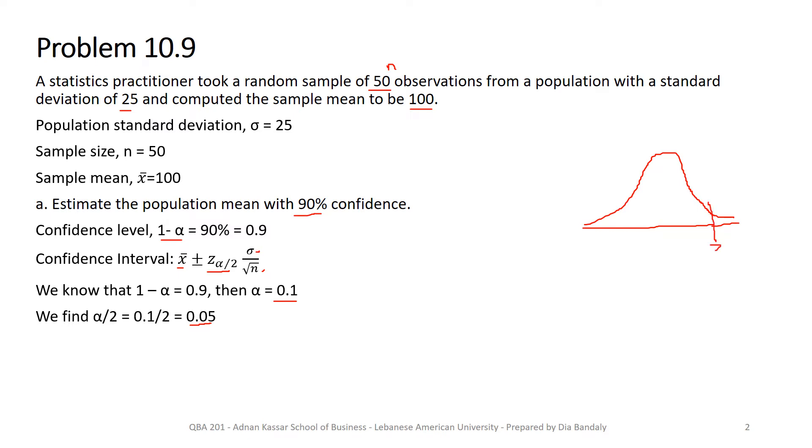So now I need to find the z value such that the area on the right hand side is equal to 0.05. This is a z value such that this area is 5%. So we look in the z table for that z value.